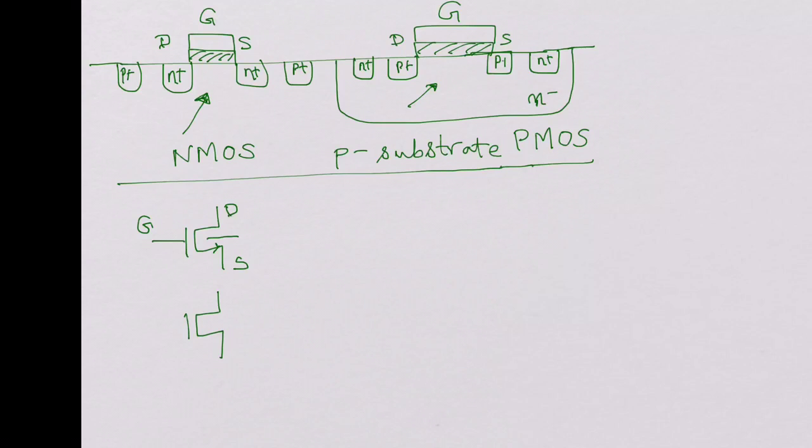Usually for digital integrated circuits, even the bulk connection, this is the bulk B, the bulk connection is not shown sometimes in digital integrated circuits because by default the bulk of the NMOS is connected to ground. Let me show the bulk here for now.